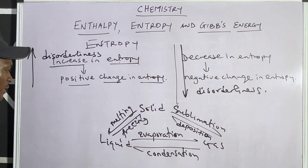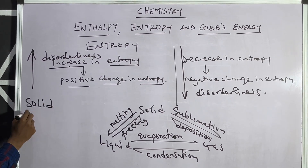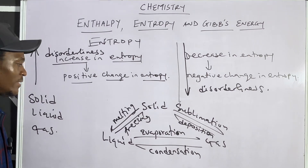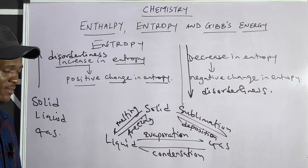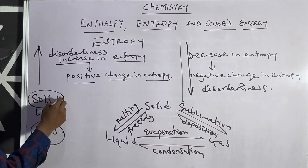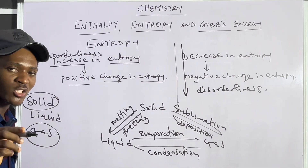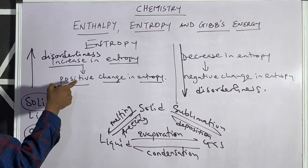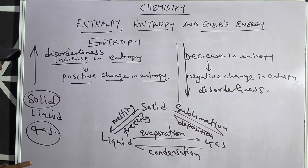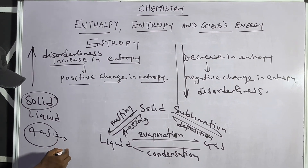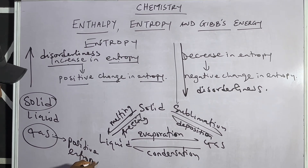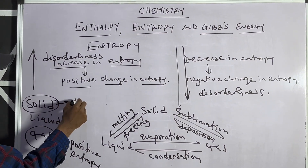There is something you need to take note of. If you have solid, liquid, and gas — which do you think has the highest degree of disorderliness? Gas. And the one that has the highest degree of orderliness is solid. So which one should be having positive entropy? Positive entropy means high degree of disorderliness, so it should be gas. This is positive entropy. Then which one should be having negative entropy? Solid — negative entropy.